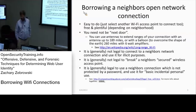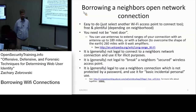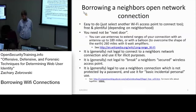Borrowing a neighbor's WiFi connection is basically easy to do. It should be free and plentiful depending on how urban your neighborhood is. You need not be next door — with an appropriate antenna and a standard WiFi connection, which would be FCC legal, you can get connections up to 189 miles away, or 260 miles with an antenna lofted up in the air.